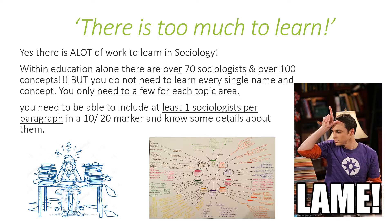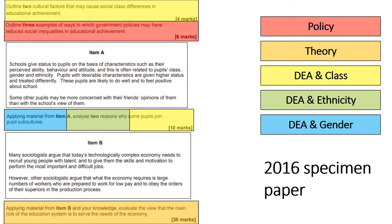You may be thinking there's too much to learn — too many thinkers, too many concepts. In sociology of education alone there are over 70 sociologists and over 100 concepts, but you do not need to know every single one. I'd suggest a handful — maybe three or four per topic area. In a 20 or 10 marker you need at least one sociologist per paragraph, so choose a handful, learn them well, and understand how their theory fits the topic.